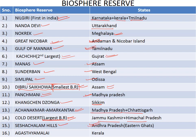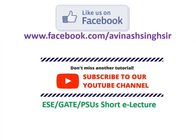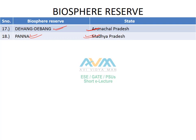Next is Seshachalam Hills Biosphere Reserve in Andhra Pradesh, followed by Agasthyamalai Biosphere Reserve in Kerala, Dihang-Dibang Biosphere Reserve in Arunachal Pradesh, and finally Panna Biosphere Reserve in Madhya Pradesh. That's all about the important national parks and biosphere reserves of India.